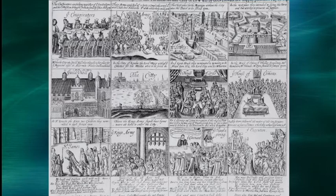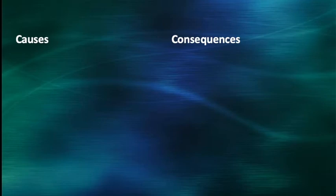This conflict really transformed English governance and altered the balance of power. It wouldn't really be concluded until 1688 with the Glorious Revolution that we'll talk about next week when we turn to John Locke. I am not going to give you a long and detailed history of the English Civil Wars; I'm going to instead focus on some of the key causes and consequences as they matter for our discussion of Hobbes.